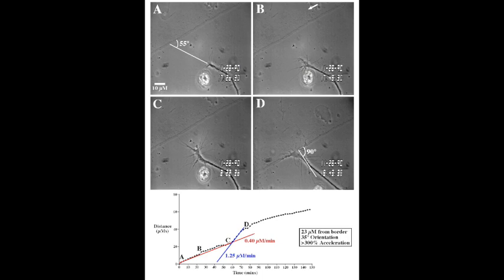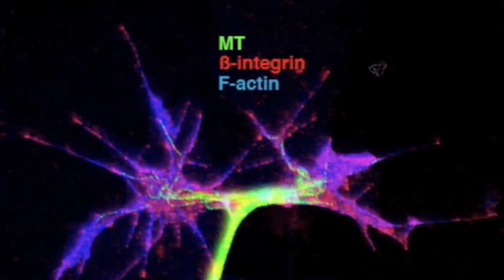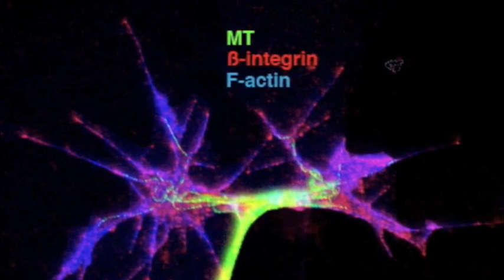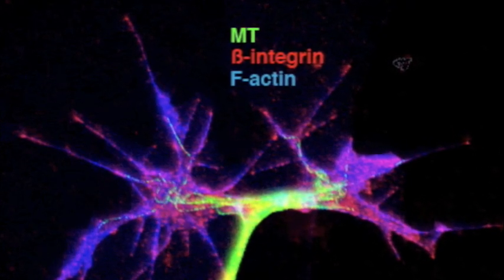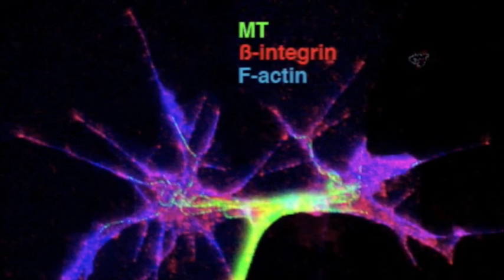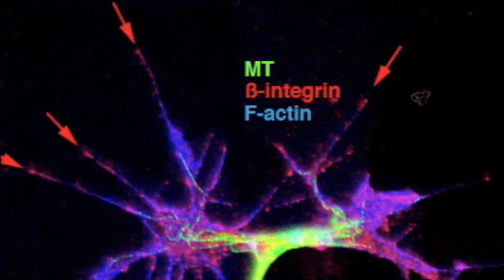The growth cone's filopodia sense the laminin surface with integrin receptors that adorn the growth cone surface. They're shown in red, especially at filopodial tips.